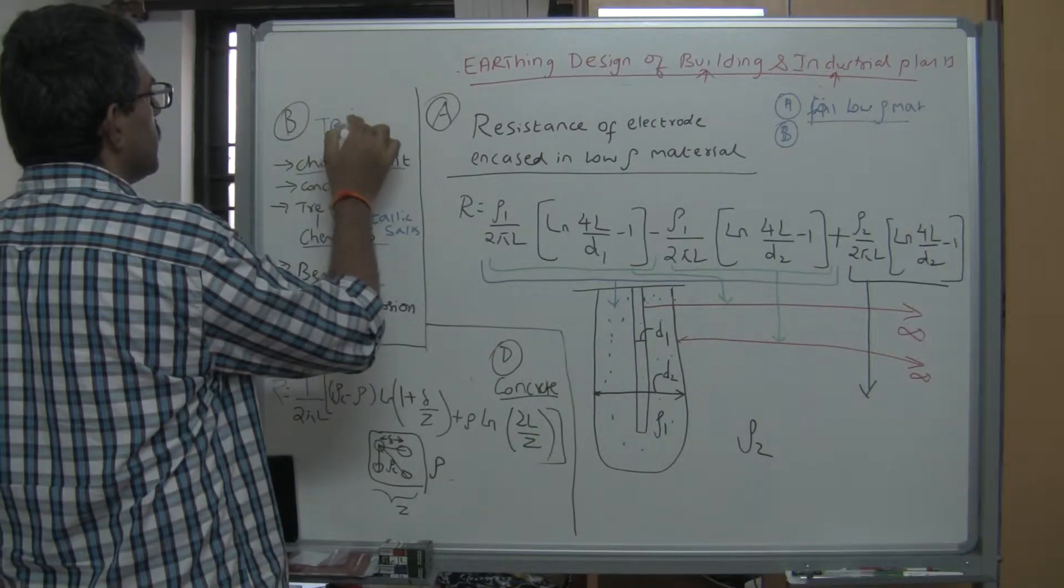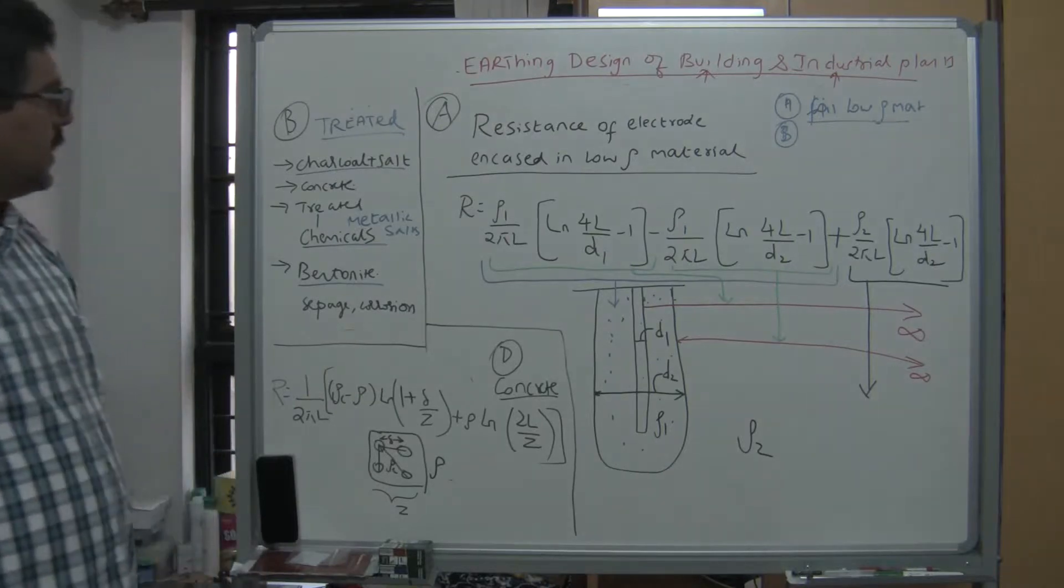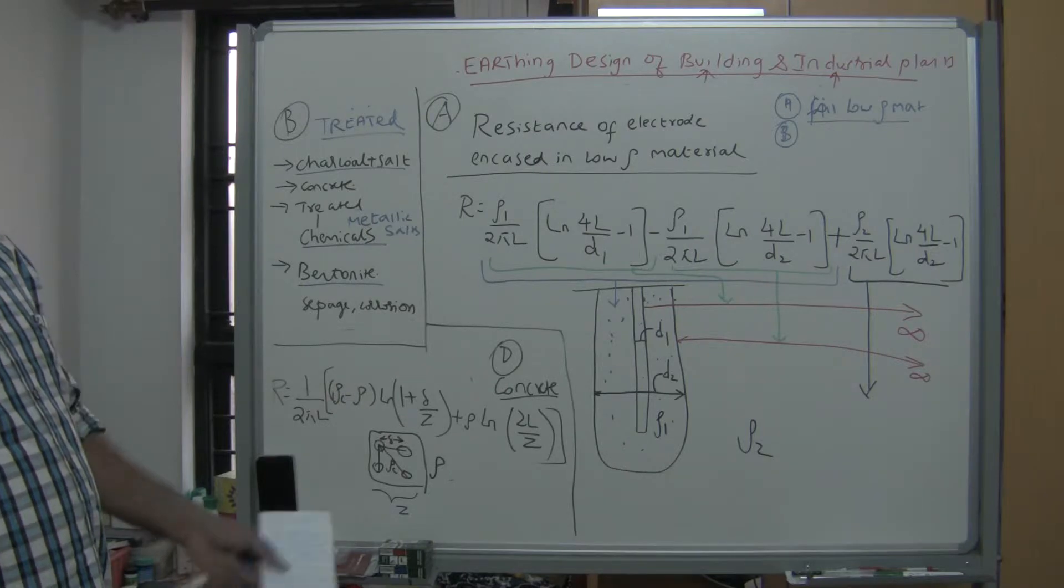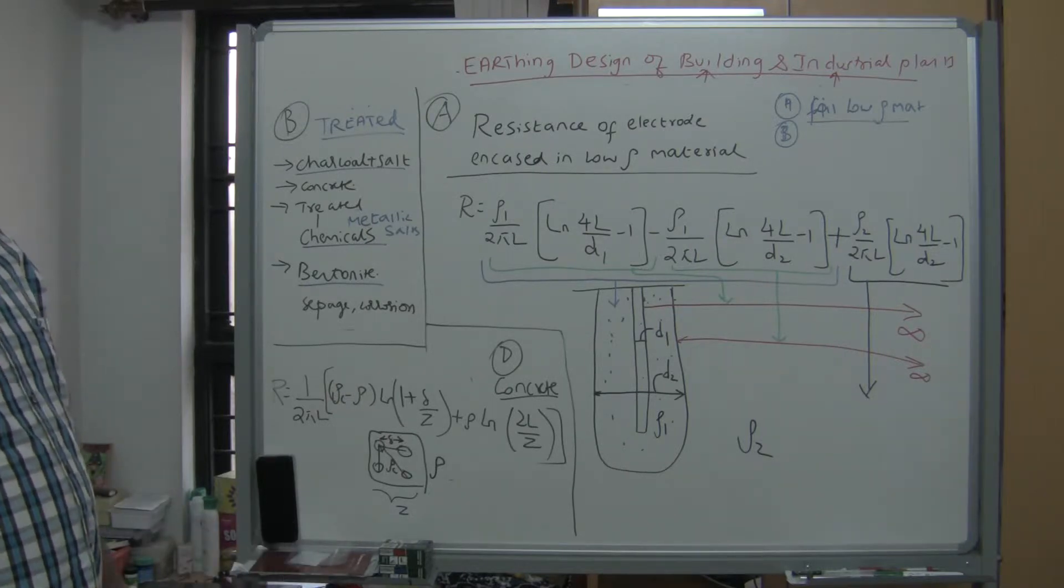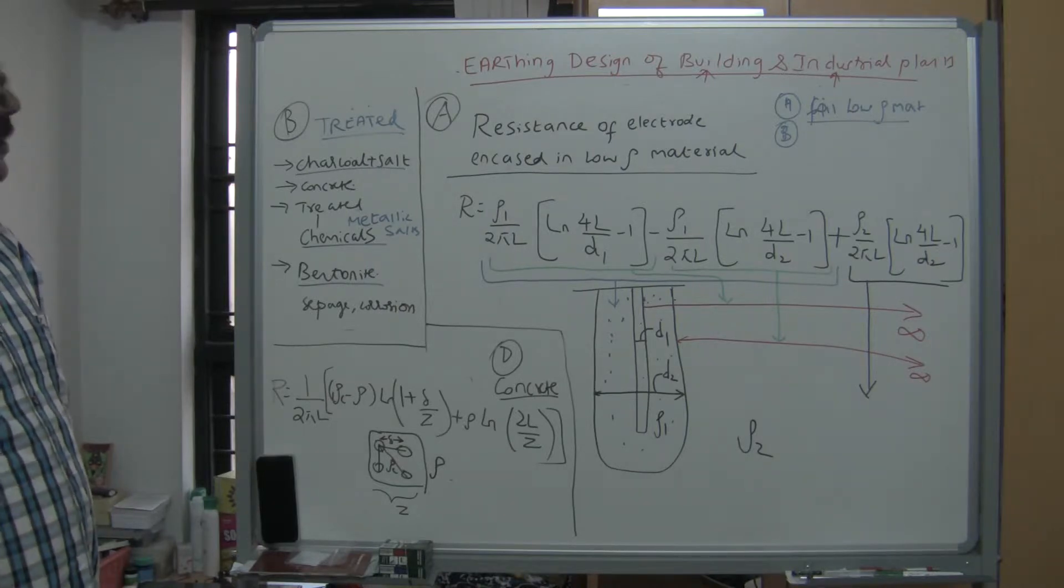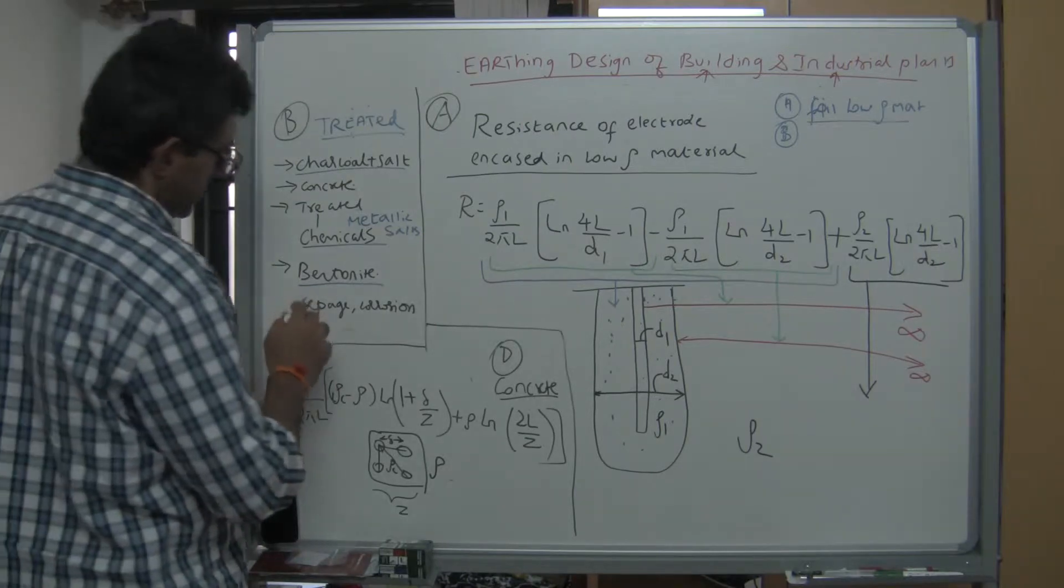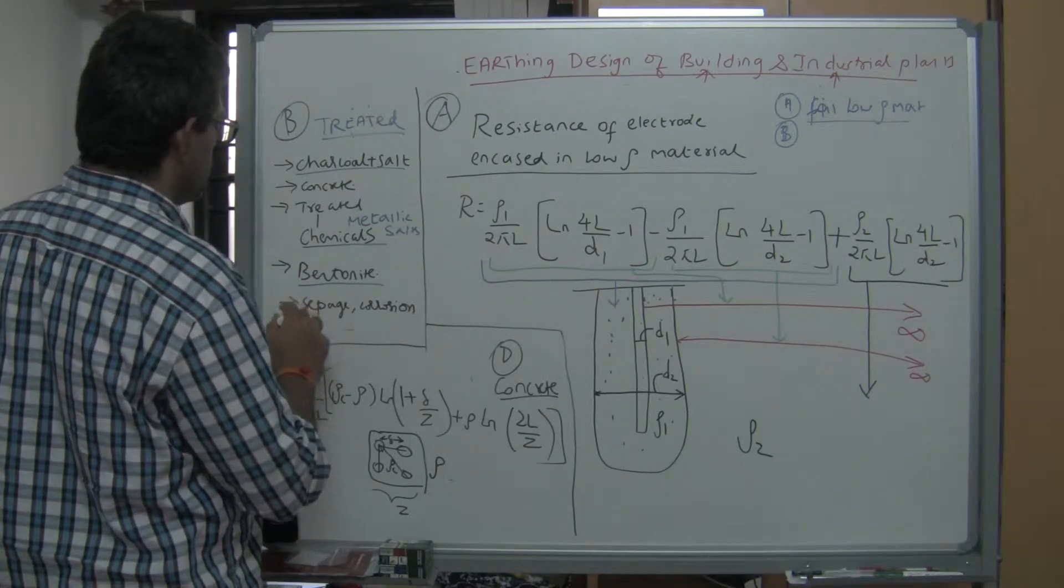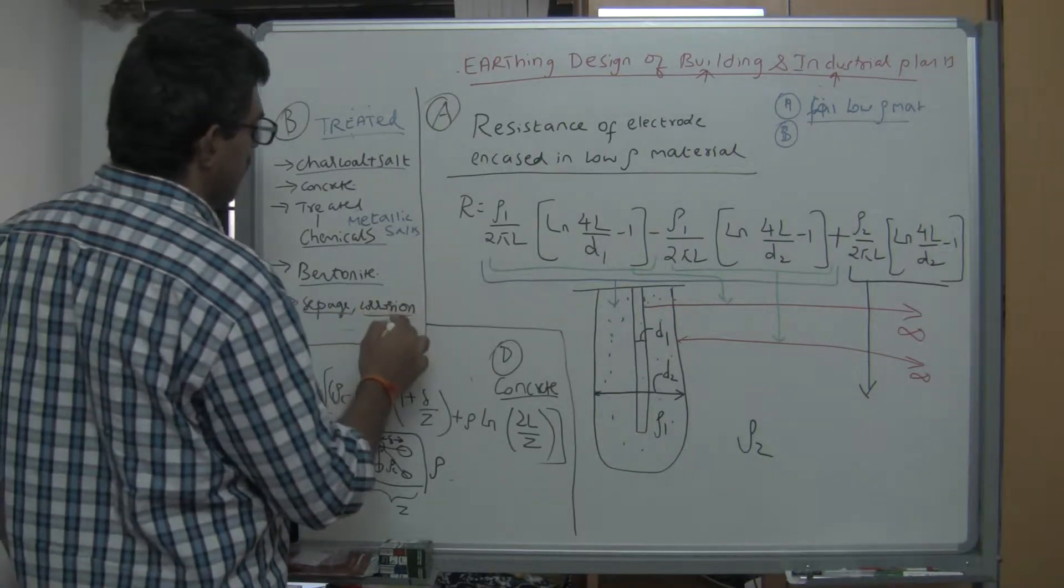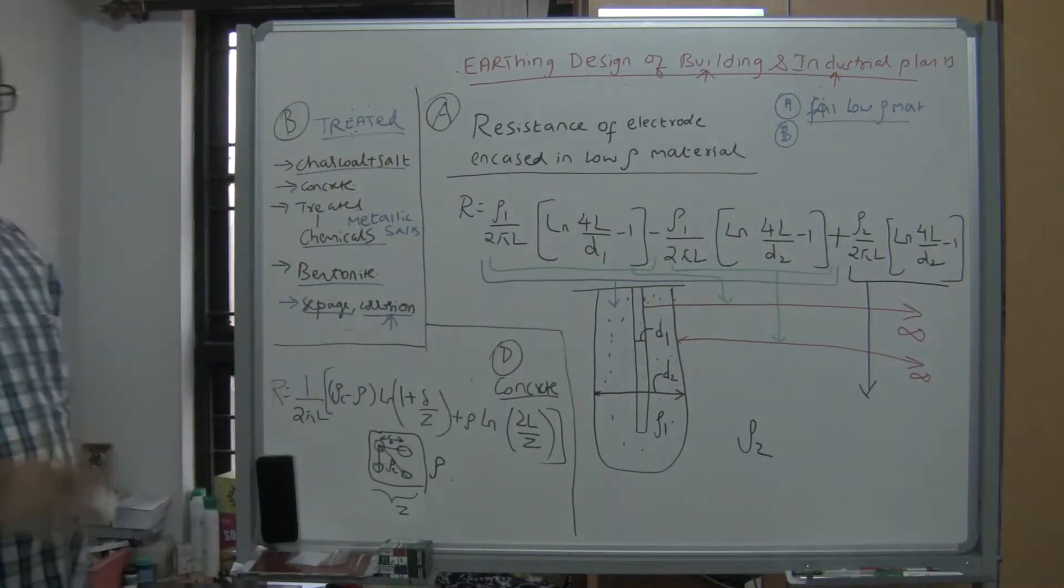This treated earth pit has an advantage - you get low resistance when an area has very high resistivity. However, there are also disadvantages: it may lead to seepage, the groundwater may get contaminated, and it may accelerate corrosion. So before you use a treated earth pit, please check whether local regulations allow it.